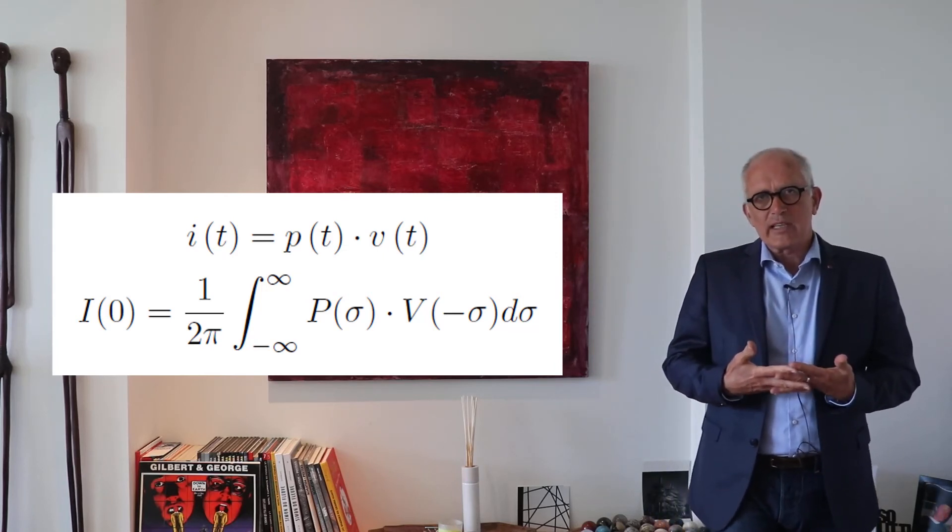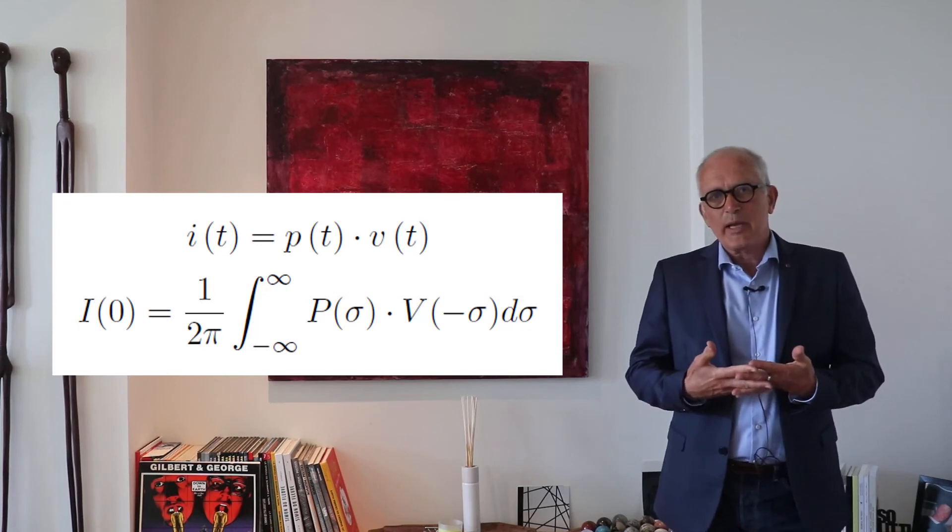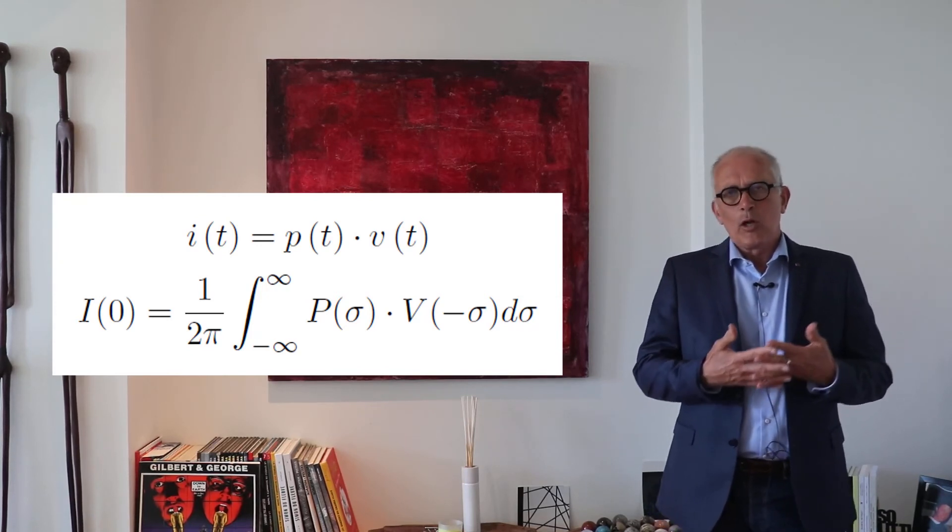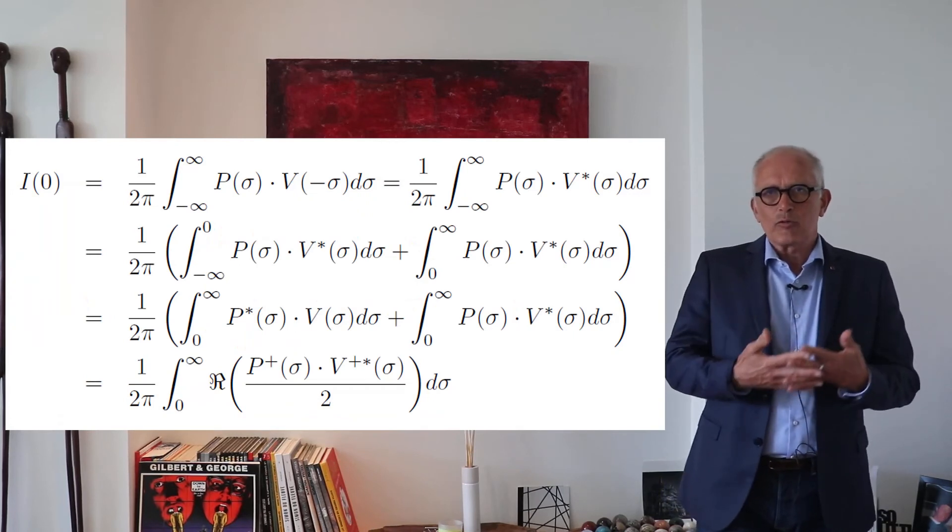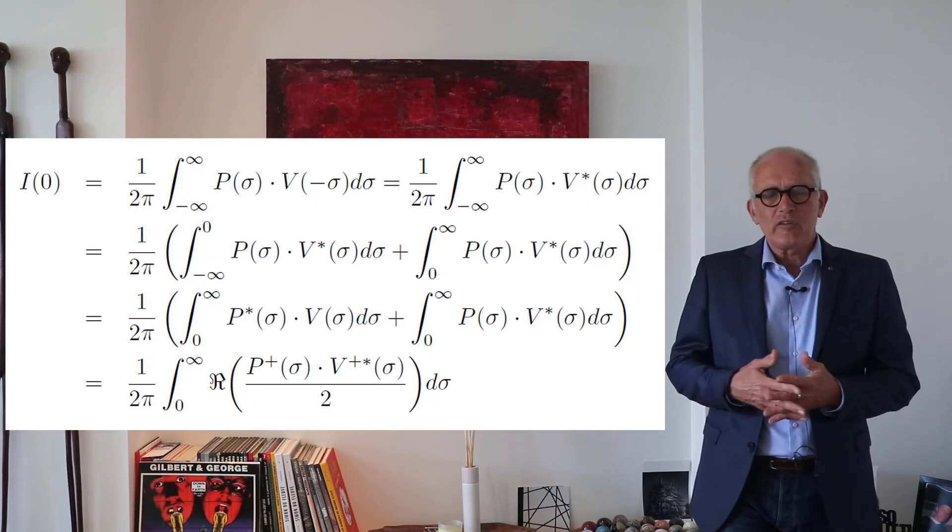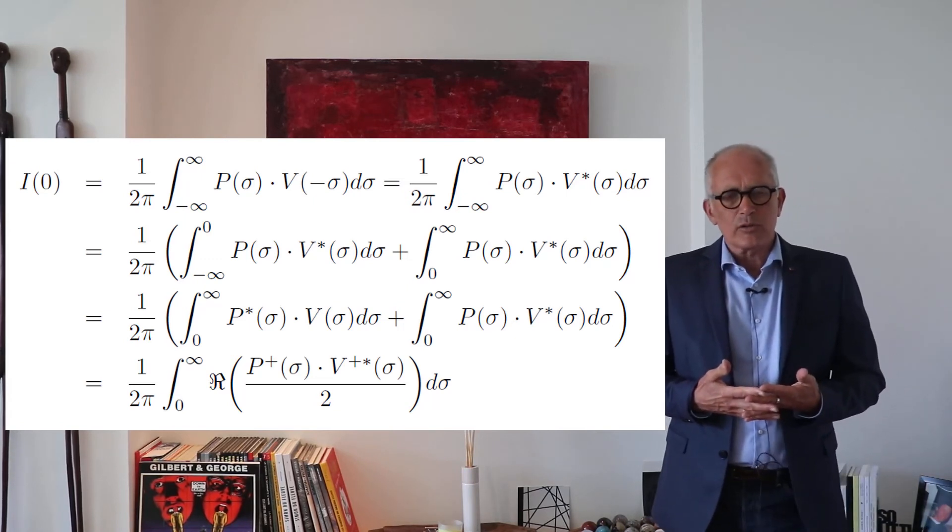If I want to use one-sided spectrum, I have to make a few transformations to that integral, to split the integral from minus infinity to zero and from zero to infinity, and make some manipulations.